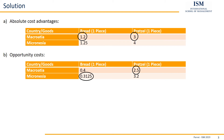This means that if trade occurs, Micronesia will specialize in pretzels and Macroasia on bread. So far so good — this can already be answered with regards to the opportunity costs.